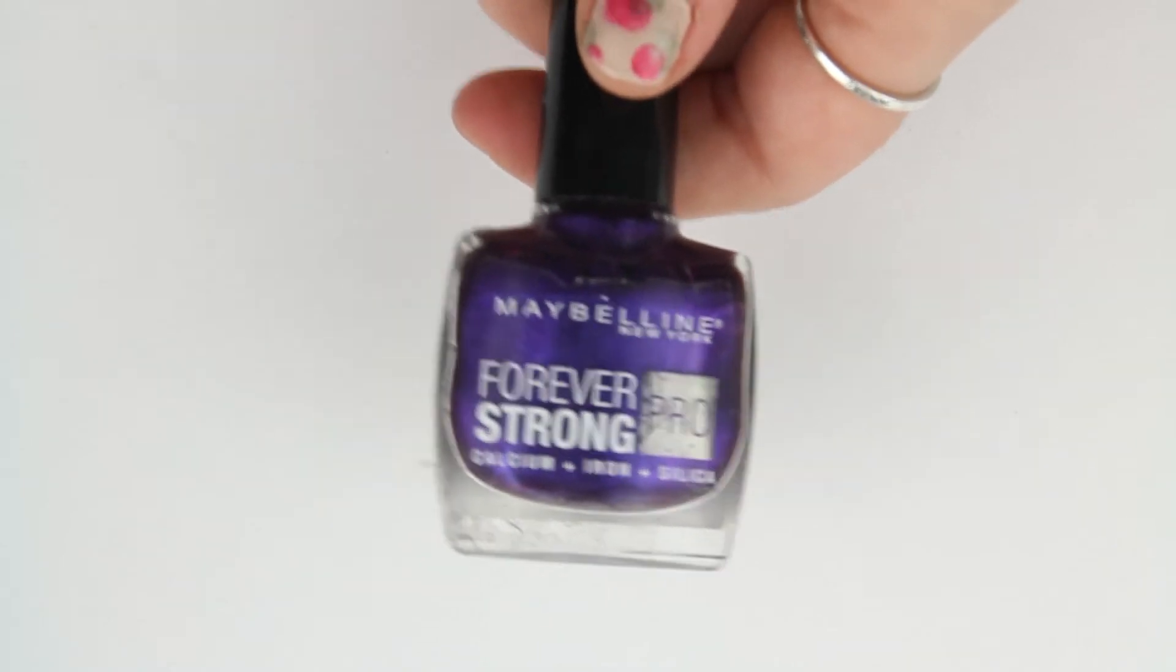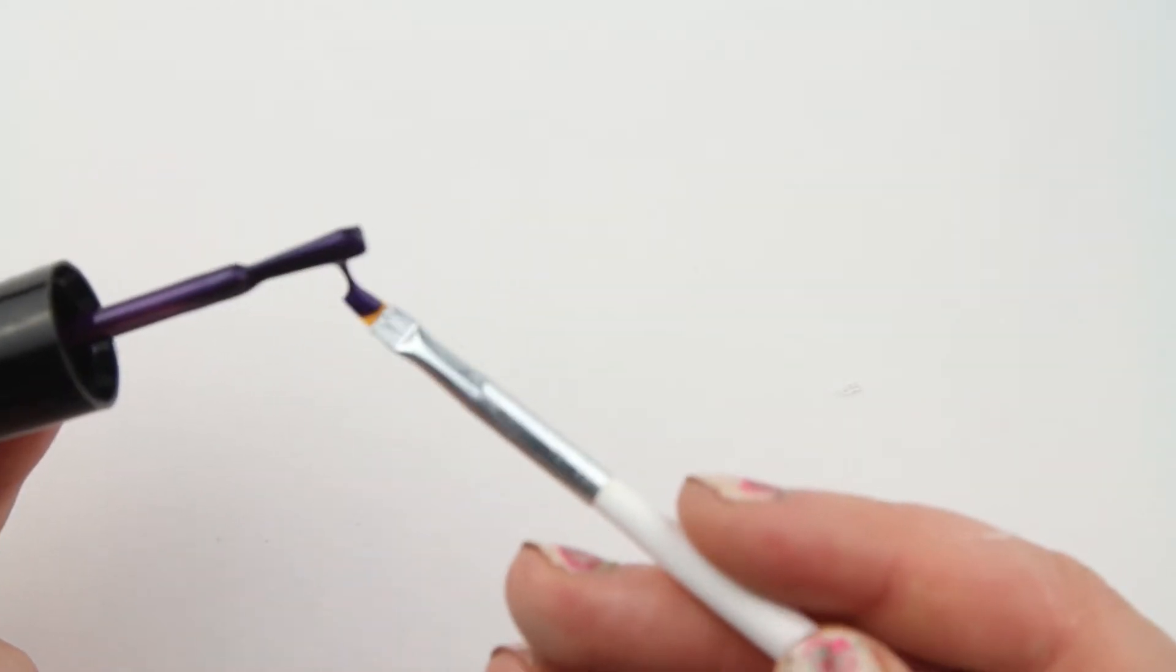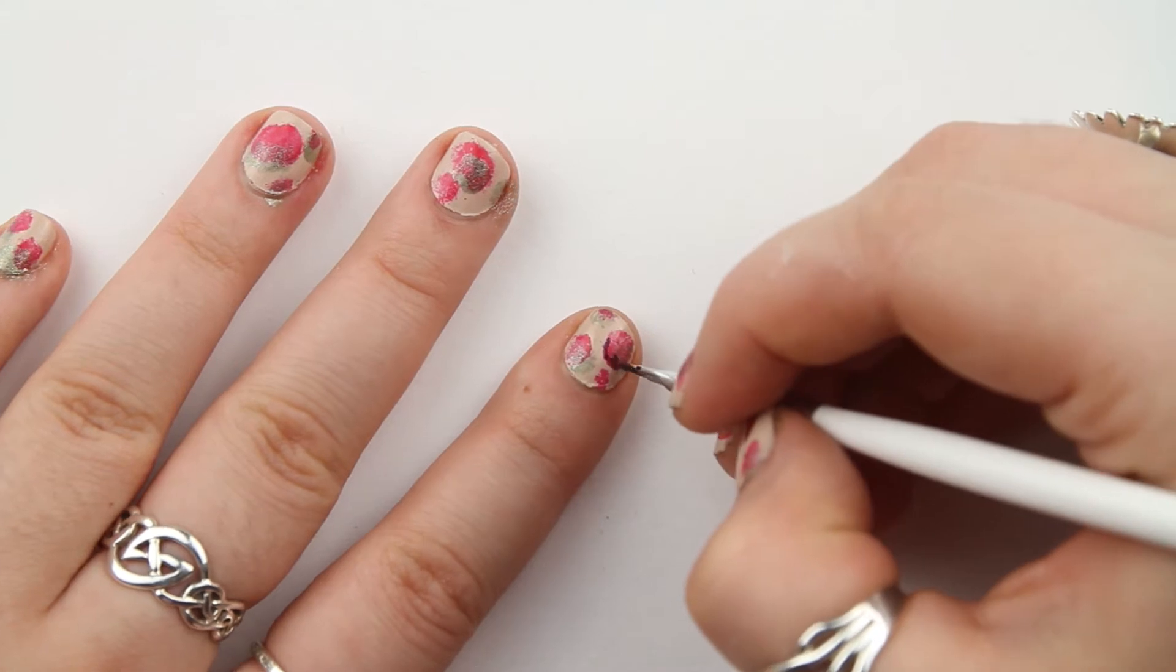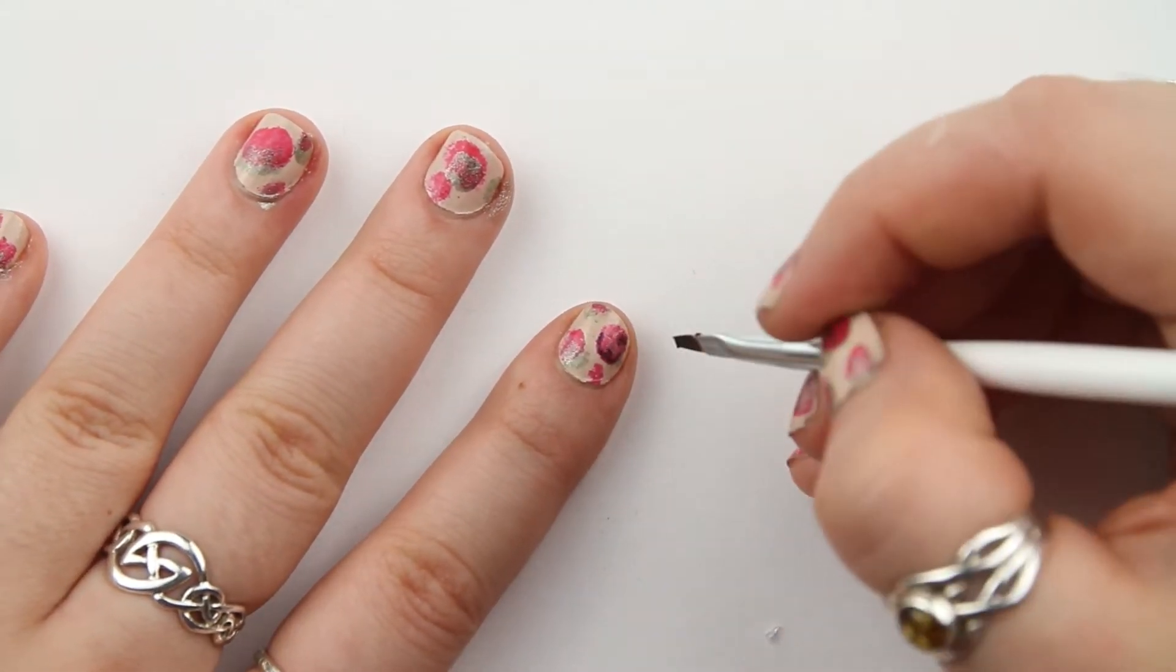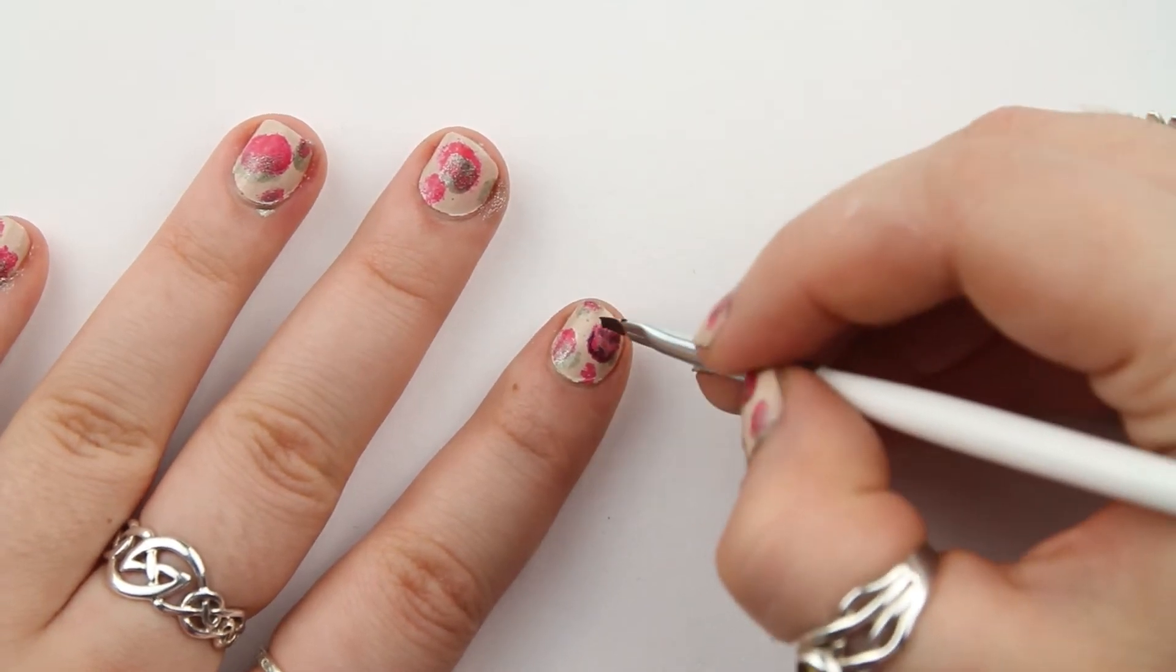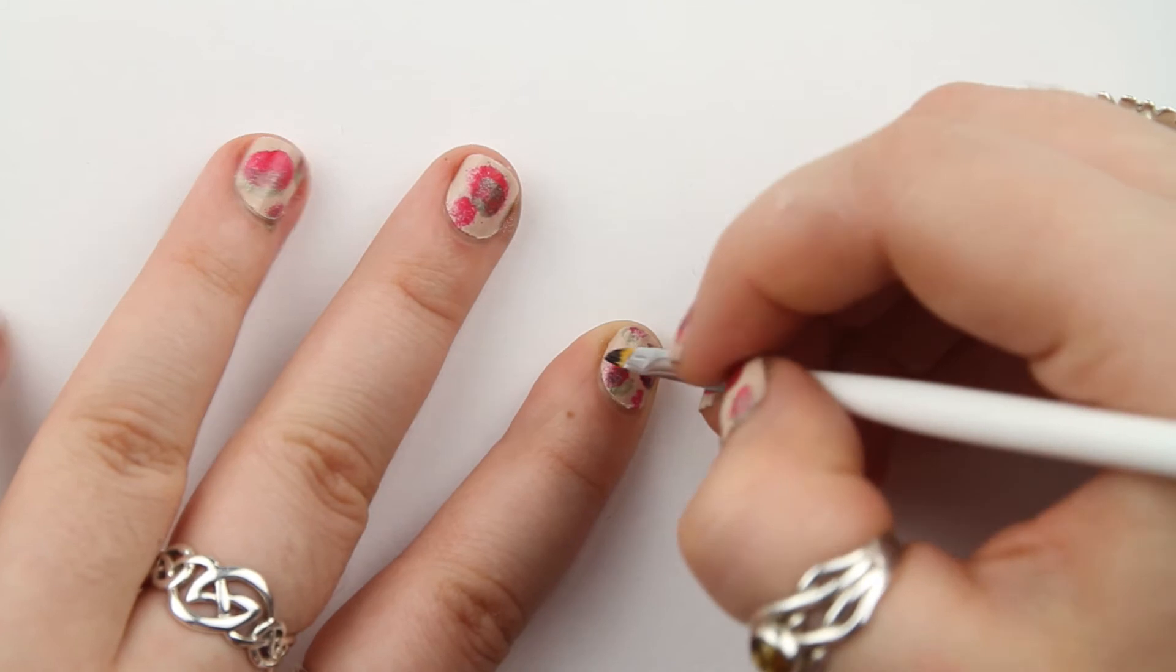I then used Maybelline's Forever Strong in shade Purple Reflects and a very small nail art brush from Amazon to add detail to the flowers. I started by adding the darker color around the edges of the flowers and then adding extra details in the center. I did this across all the nails, adding more detail but not being perfect about it, like the design on the bag.